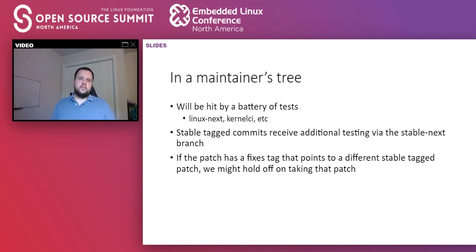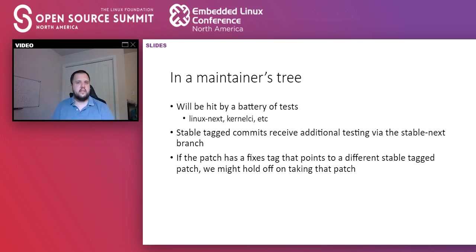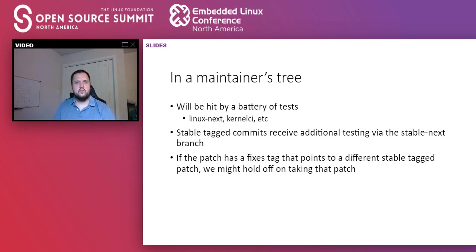Once your patch is reviewed and accepted into a maintainer's tree, it will usually end up in the Linux Next tree, where it will be hit by a battery of bots that test those trees. Other systems like KernelCI also build individual maintainer's trees and run tests on them. So once the patch is in the maintainer's tree, it's exposed to a battery of automated testing, which is a good first bar to clear.